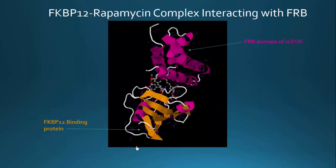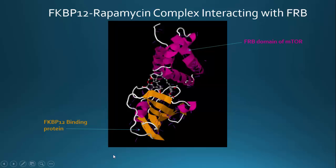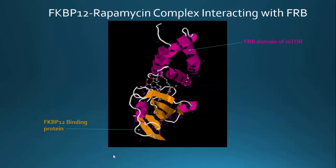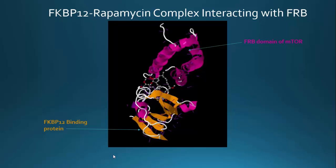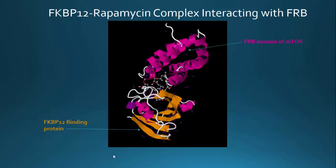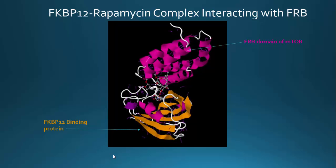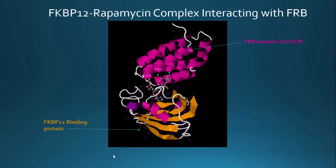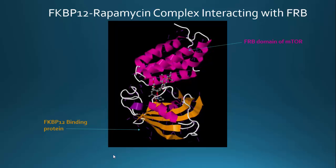Rapamycin inhibits the phosphorylation activity of mTOR by acting as an allosteric regulator. It forms a ternary complex with FKBP12, a binding protein, and then binds the FRB domain of mTOR. It is believed that this complex hugely restricts the already constricted catalytic domain of the protein, supported by experiments where mutations that loosen the active site cause mTOR hyperactivation. This animation shows the interaction between FKBP12, rapamycin, and FRB, with hydrogen bonds shown as purple lines between both protein components and protein-rapamycin components.